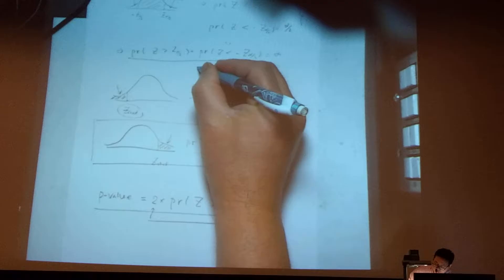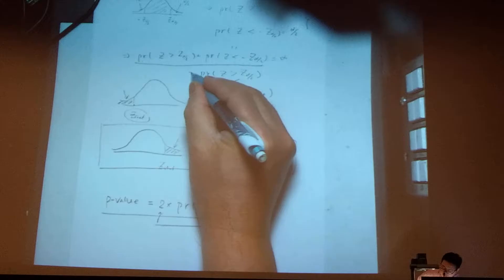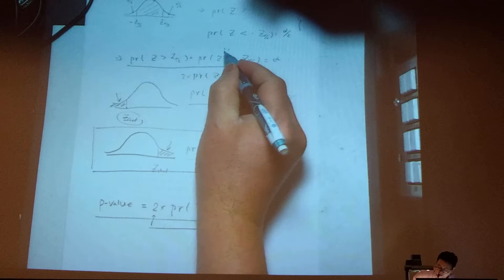If you compare this result to this one, so I have this one which is that this, and this is the same. So basically I will have the probability for Z bigger than this one, alpha divided by 2.